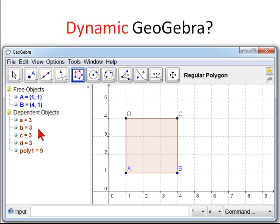Over here we see information about the square. These are the lengths of the sides. This is the area of the square. OK, what's dynamic about this?